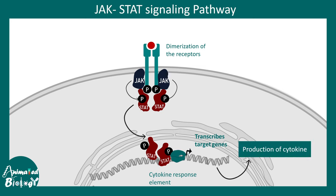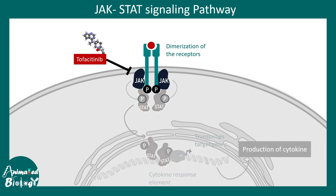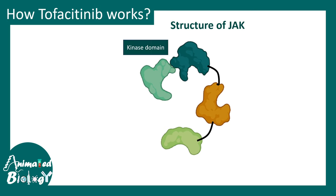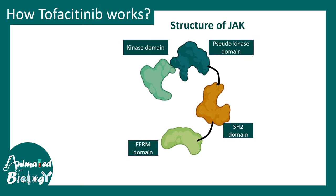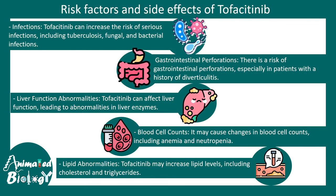We can understand that a drug capable of blocking cytokine production would be really beneficial. Tofacitinib blocks JAK and thereby prevents all downstream signaling via the JAK-STAT pathway, preventing inflammatory cytokine production. It acts as a competitive inhibitor, competing with ATP to prevent it from binding to the kinase domain of JAK, rendering JAK non-functional and unable to transduce the signal downstream.